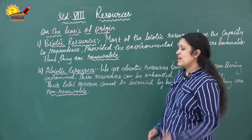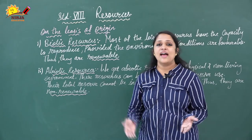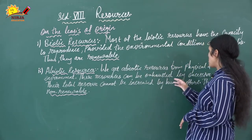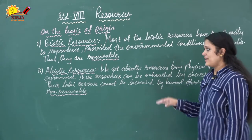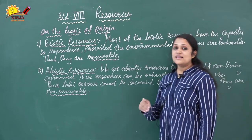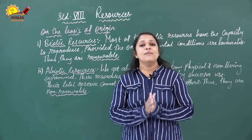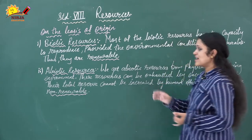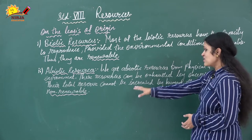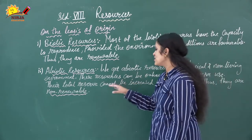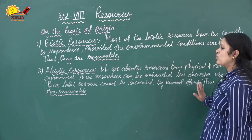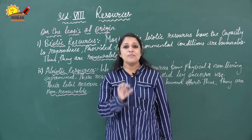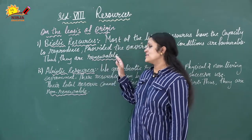Abiotic resources are non-living things — for example, land, air, water, and minerals. We get abiotic resources from the physical and non-living environment. These resources can be exhausted by excessive use, and their total reserve cannot be increased by human efforts. Therefore, they are non-renewable resources.